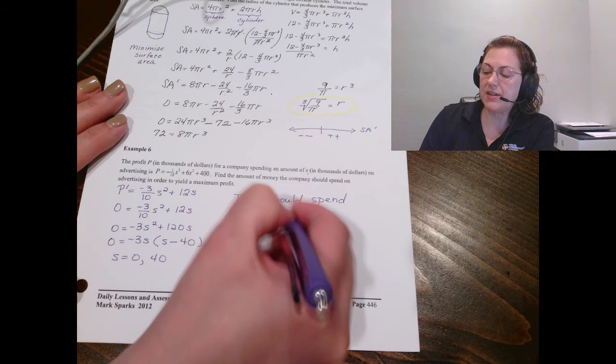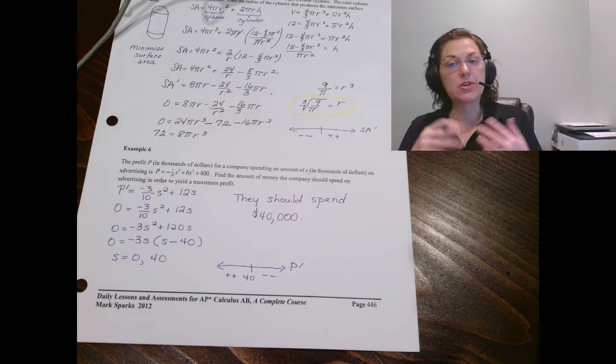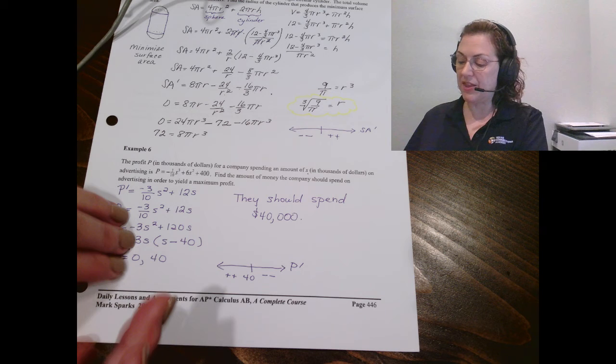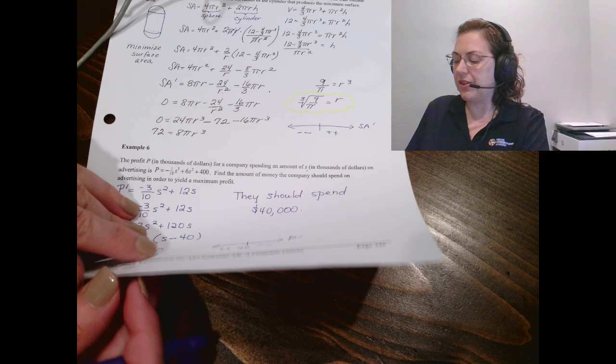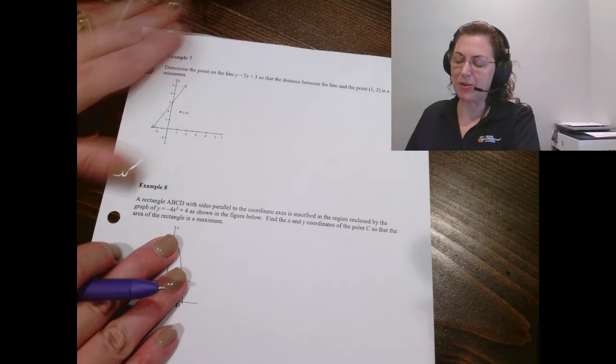So the amount of money the company should spend on advertising, that was s, and they should spend $40,000. Remember, you want to not just say s equals, you want to translate it back to the problem. That's why I included the thousands of dollars.